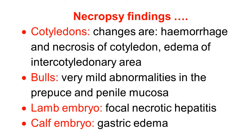Bulls, as we know, are the carriers and the organisms are present in the crypts of epithelium. In bulls, there are no abnormalities, or if there is an abnormality, it is very mild — in the prepuce and penile locale — so it is not characteristic. Lamb embryos show focal necrotic hepatitis where the liver is affected, but in the calf embryo, gastric edema is observed.